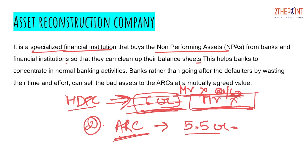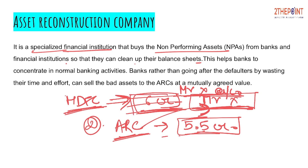The responsibility of getting the settlement from Mr. X now lies with this ARC. The ARC will directly get into contact with Mr. X and collect the money for this account, or will sell Mr. X's assets which were kept as collateral with HDFC Bank and recover the money. This is how ARC works — whatever NPAs banks are holding, ARCs buy them and handle all the settlement and recovery processes.